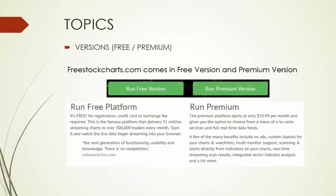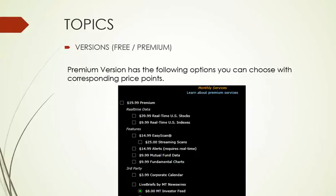FreeStockCharts.com comes with a free version as well as a premium version. The premium version starts at $19.99, or $20 US dollars — not Canadian. For the free version, you don't need a credit card; you just have to sign up and you can use it. The premium version has additional options: it starts at $20, then if you'd like real-time data for US stocks, that's an additional $40, and $10 for indexes, plus other features you want to add.